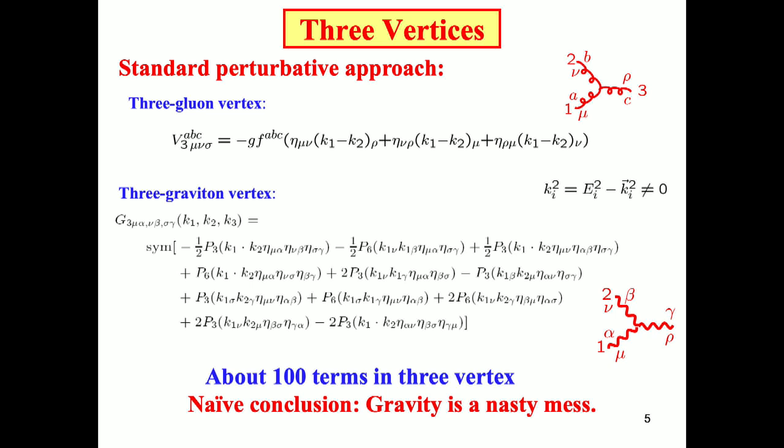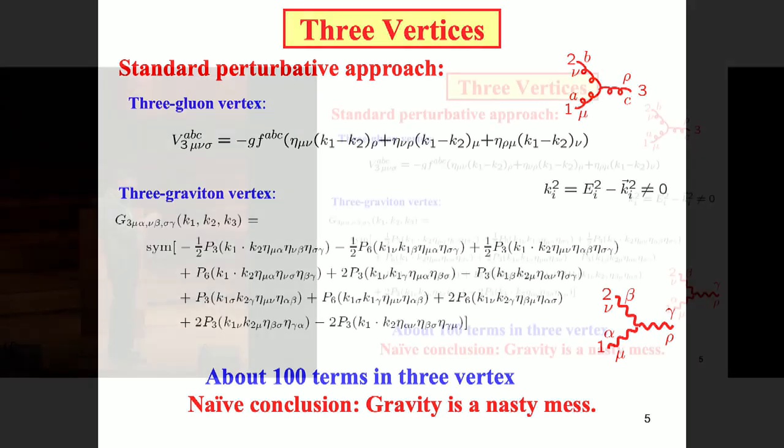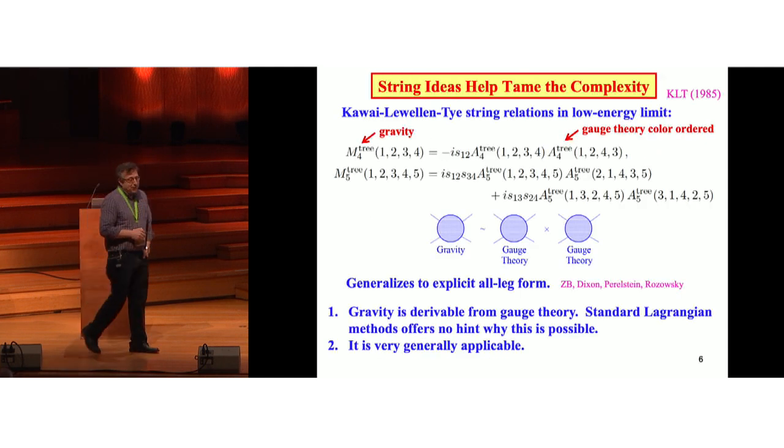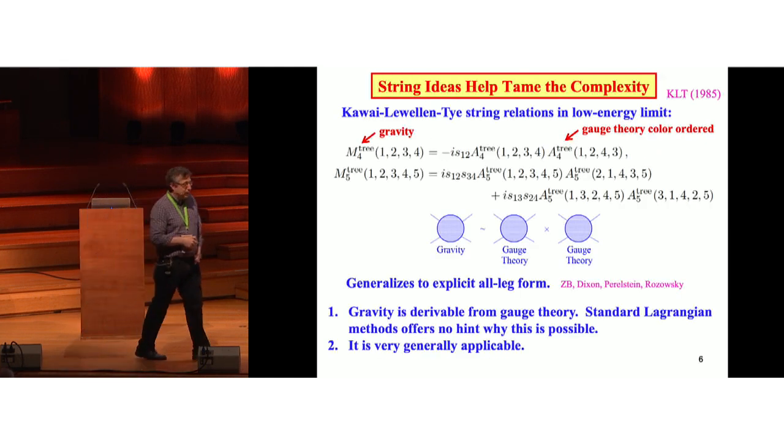This thing is written in a very compact way. There's P6, which means six permutations. There's a sym here. You have to symmetrize over the fact that the gravitons are symmetric tensors. If you were a graduate student and your advisor gave you something with a three graviton vertex, you'd say, oh yeah, I should go work on a different problem. But in fact, that's the wrong way to look at it.